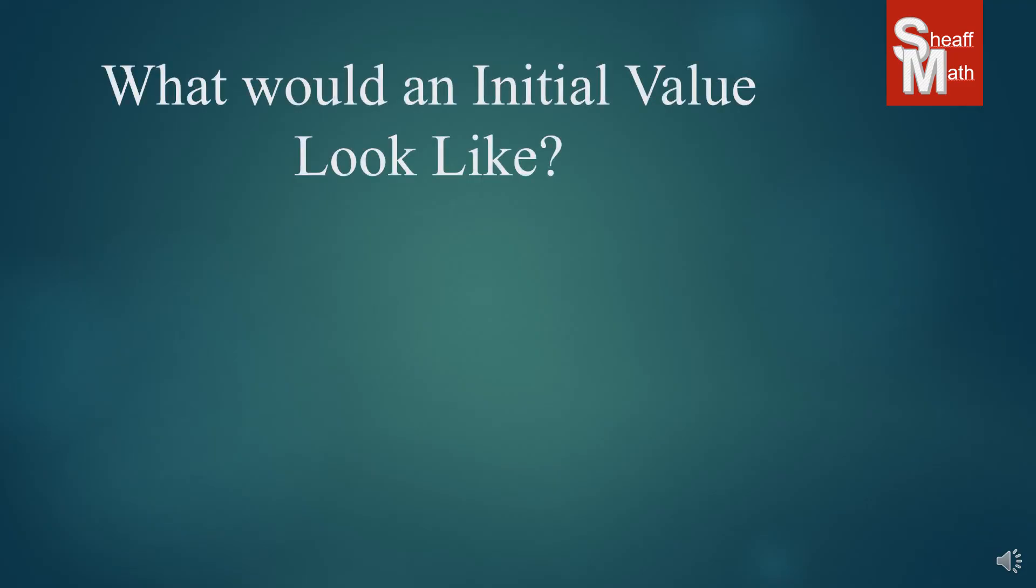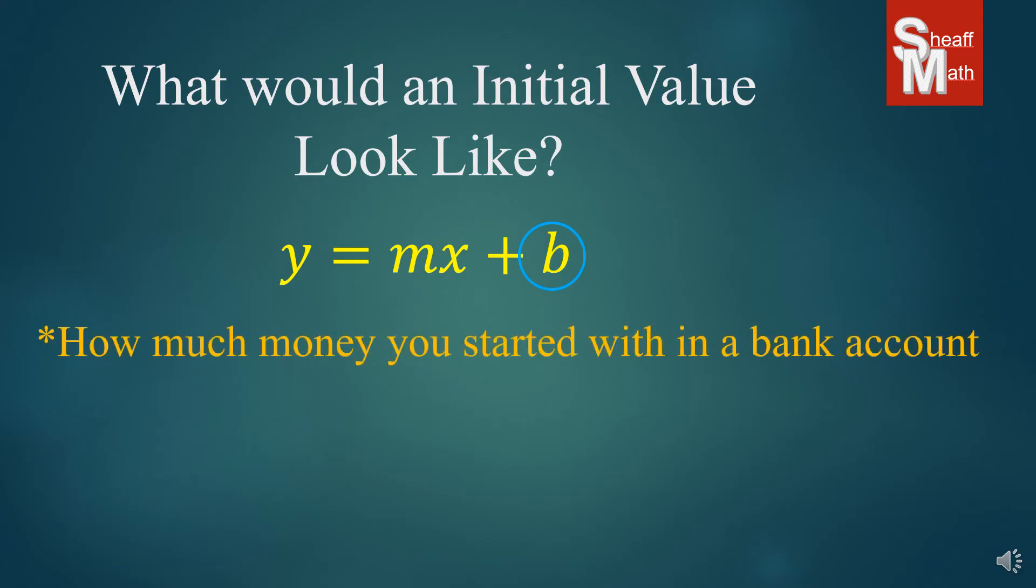What about the initial value? What does that look like? The b, the y-intercept. Now this is the initial term or initial cost. And so here are a few examples. How much money you started with in a bank account. If you opened up a bank account and put in a certain amount of money, that would be your initial value. And then you might add to it each time. You might take away from it, but that initial value will never change. It's constant.